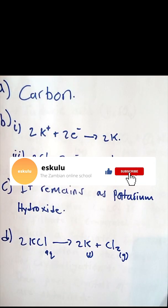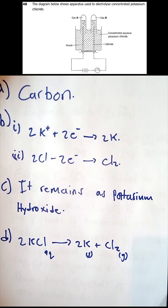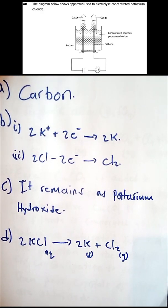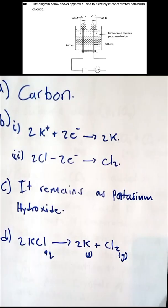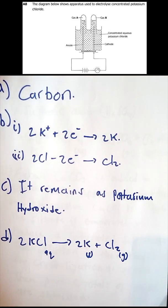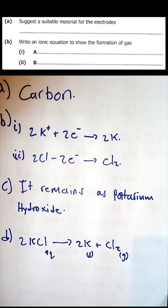We move on to question number eight. The diagram below shows apparatus used to electrolyze concentrated potassium chloride. Check your notes on the electrolysis of potassium chloride for all the information you need. The first part asks: suggest a suitable material for the electrode. When you want to electrolyze potassium chloride, the electrode material is carbon.